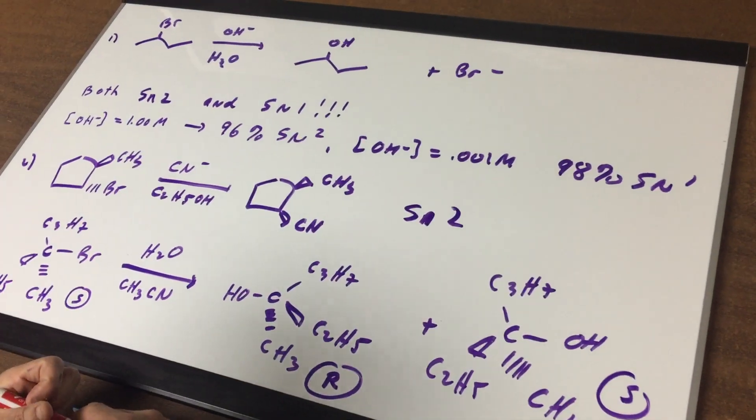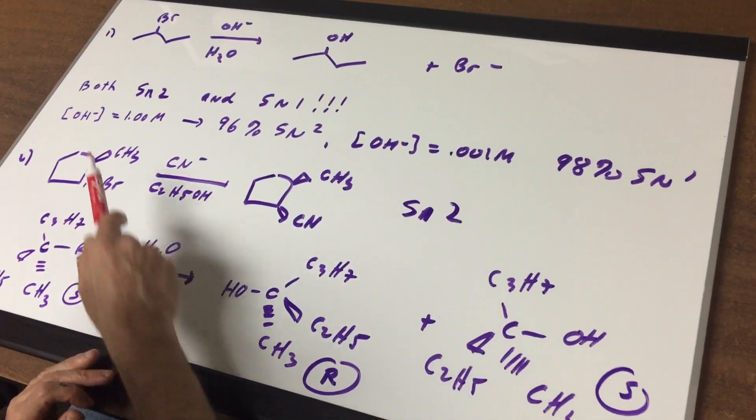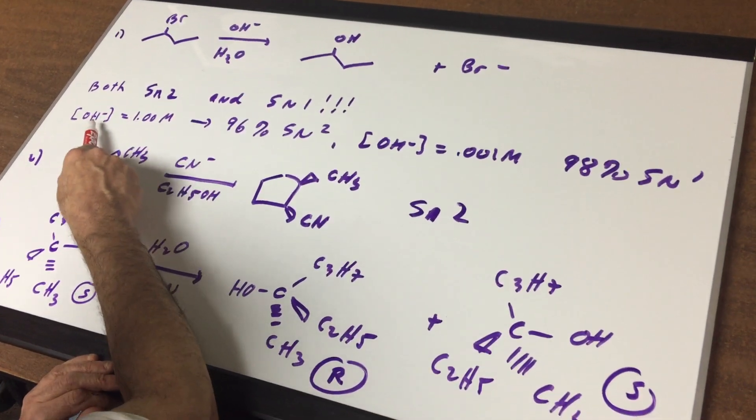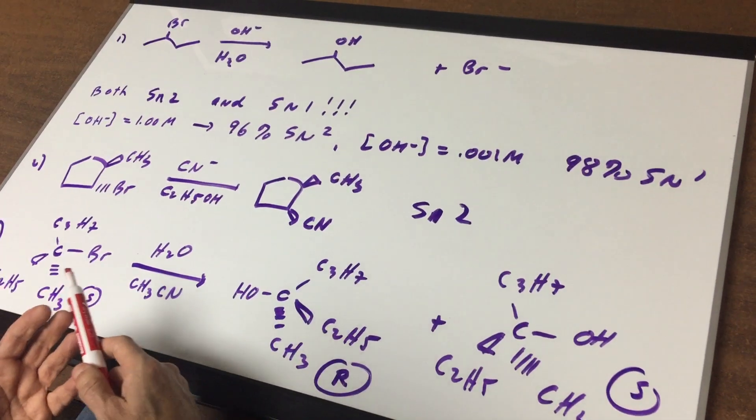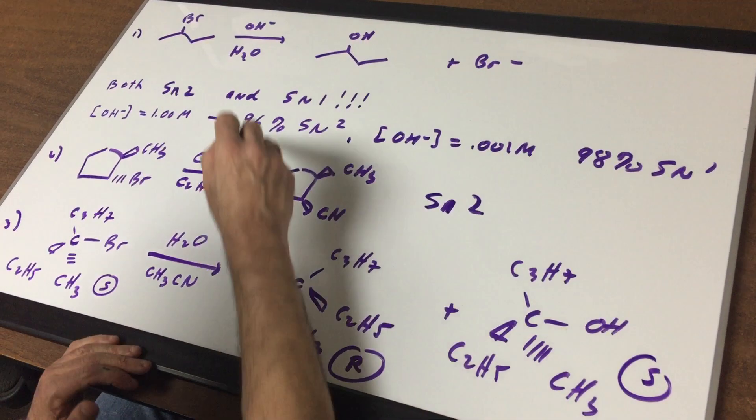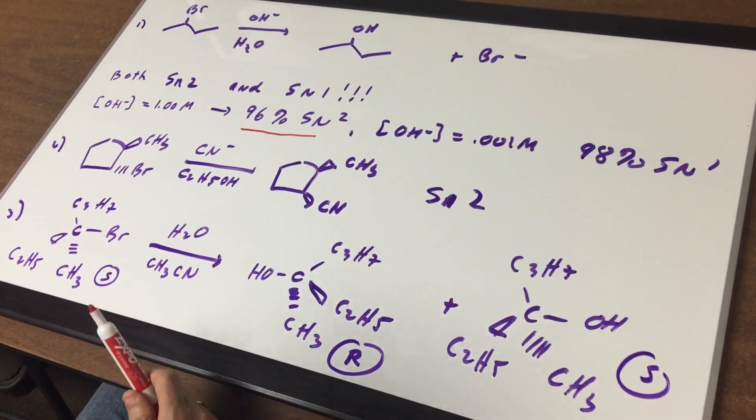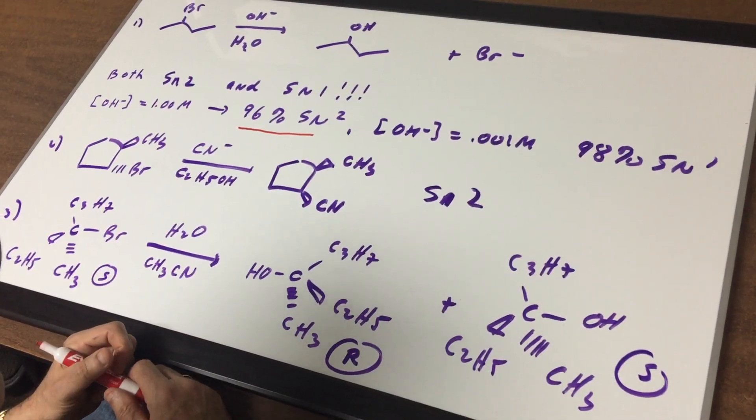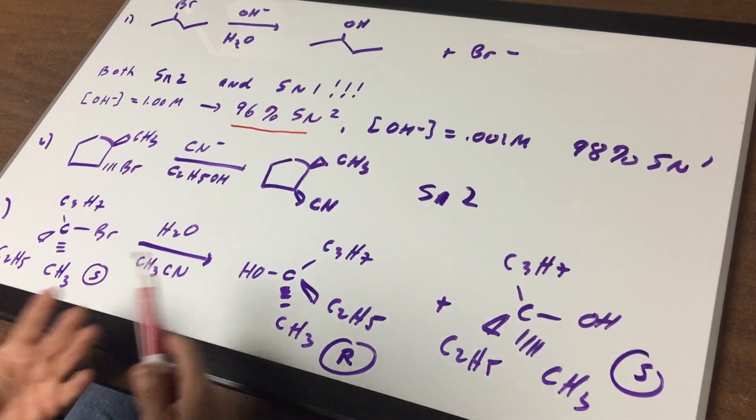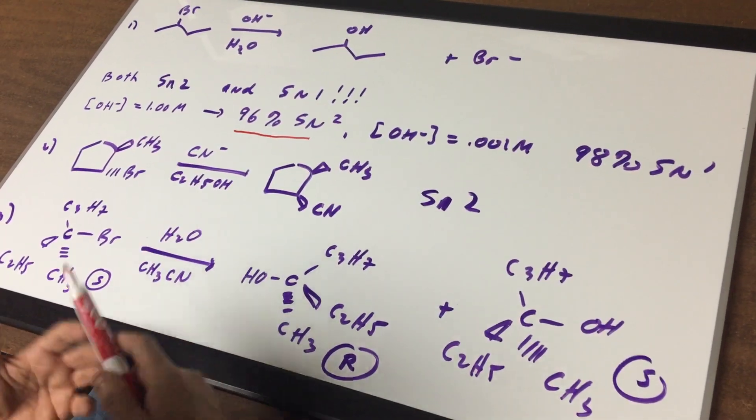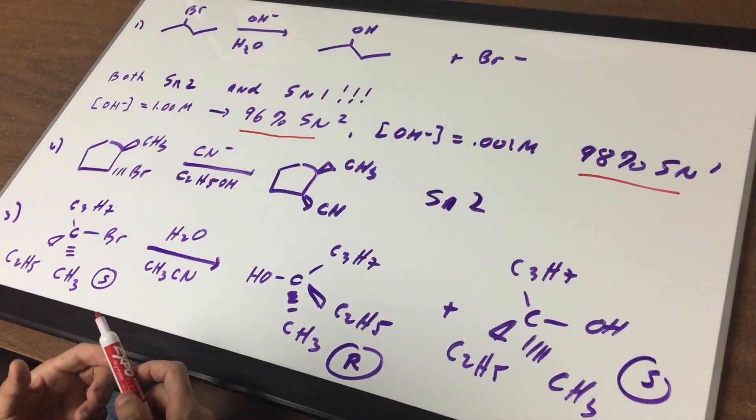It would depend on the amount of concentration. If the concentration of nucleophile was high, say one molar, the nucleophile is high and it's strong, it turned out experimentally we got 96% SN2. If the concentration of the nucleophile was very diluted, then the mechanism would switch over and I got 98% SN1.